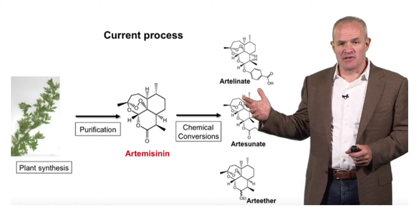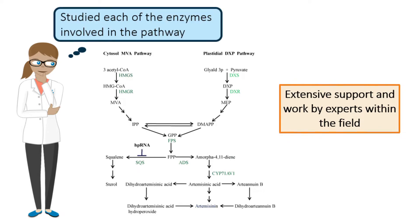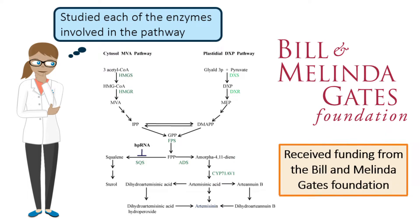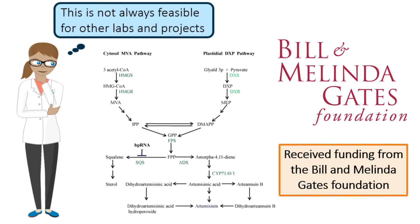However, the slow growth cycle of the plant and inconsistencies in harvest have caused the supply and price of the drug to fluctuate substantially throughout the past decade. A team of researchers led by Professor Jay Kiesling aimed to solve this problem by producing the drug in yeast through a variety of synthetic biology approaches. The team was comprised of experts within the field who studied each of the enzymes involved in the pathway to guide their design and engineering. With support and funding from the Bill and Melinda Gates Foundation, the team finally managed to produce a precursor of the drug in a reasonable titer after 12 years of extensive research and development. While it is a great story and example in the field of synthetic biology, there was extensive support and knowledge that was required for this to work. However, extensive a priori knowledge and support such as this is not always available or feasible for other labs and projects.